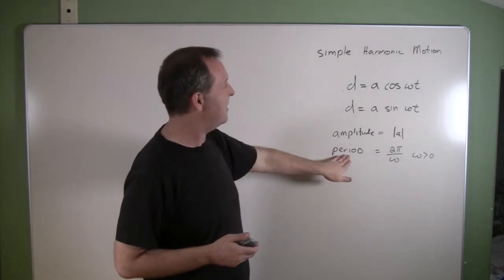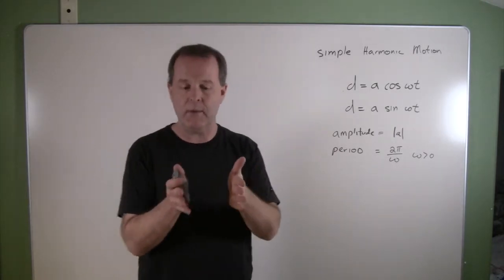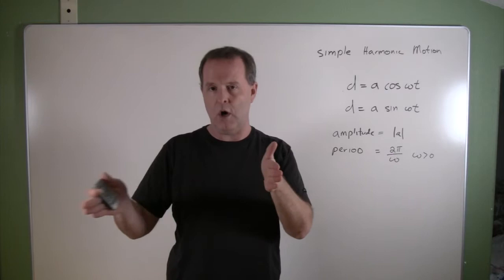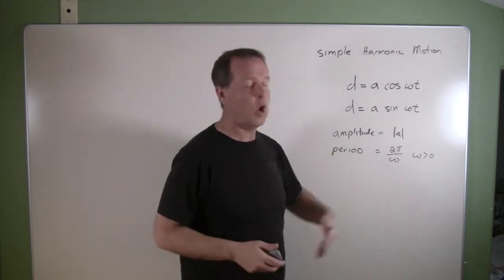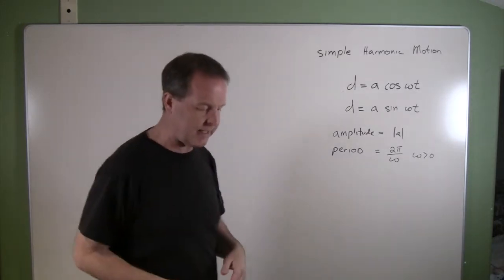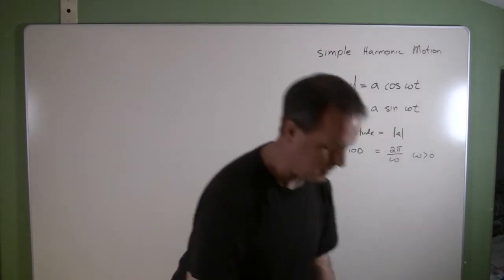value. And then the period of that particular period means how much does it go through one movement, is defined by 2π over that omega. So let's get an idea here that I have. So I